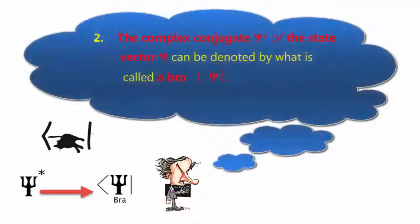2. The complex conjugate ψ* of the state vector can be denoted by what is called a bra vector ⟨ψ|.